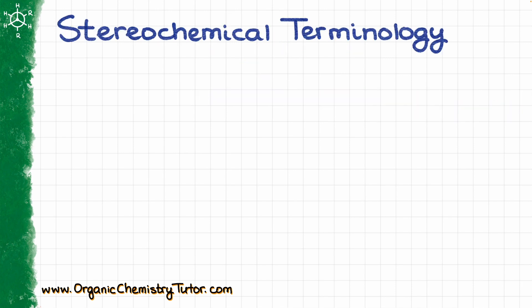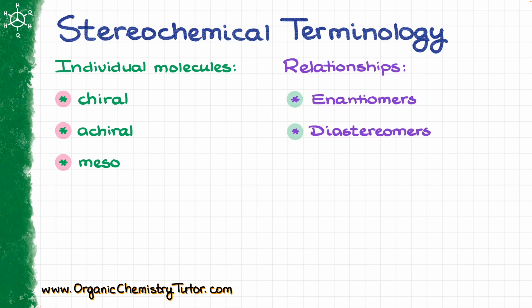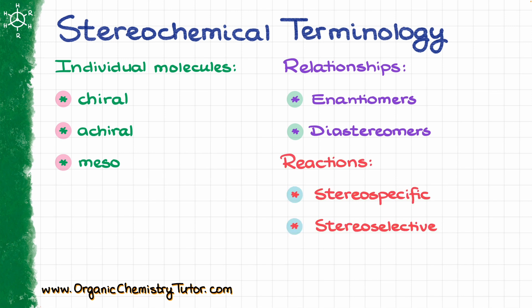There are a lot of terms in stereochemistry that we use to describe individual molecules, such as chiral, achiral, or meso compound. We also have terms to describe the relationships between stereoisomers — we have enantiomers and diastereomers. But we can also describe the stereochemical outcomes of reactions using the terms stereospecific and stereoselective. And despite what many people think, these two terms are not mutually exclusive.